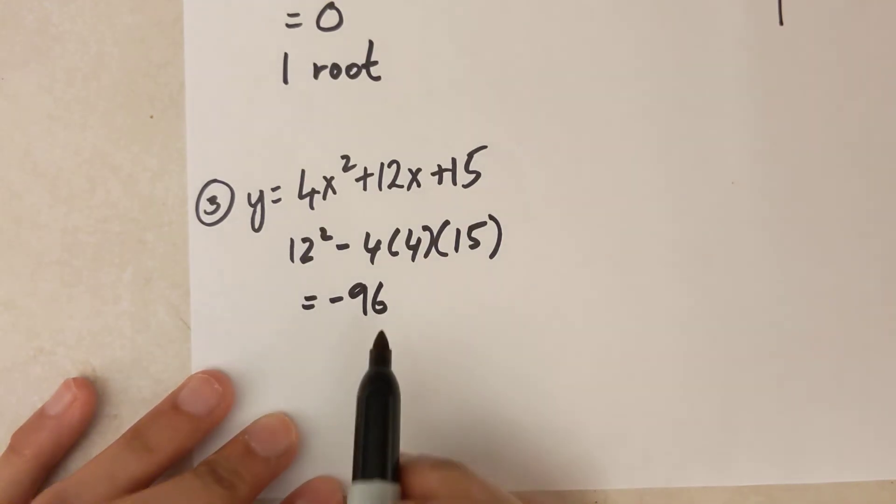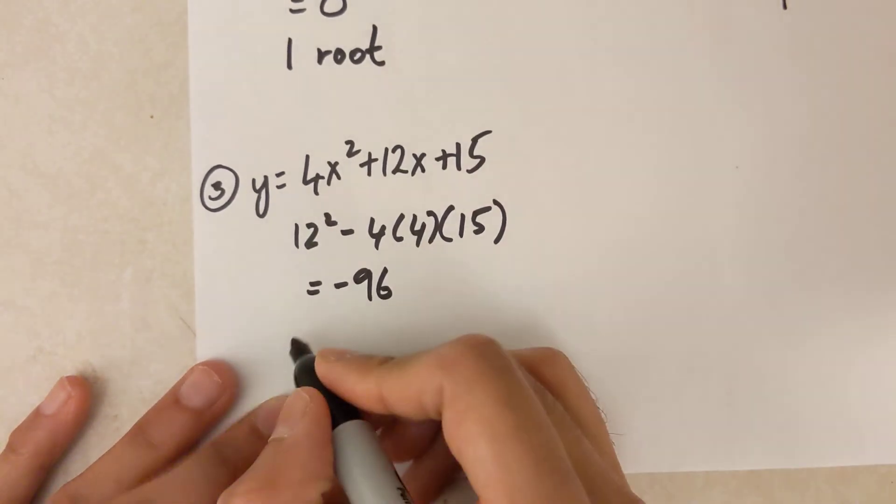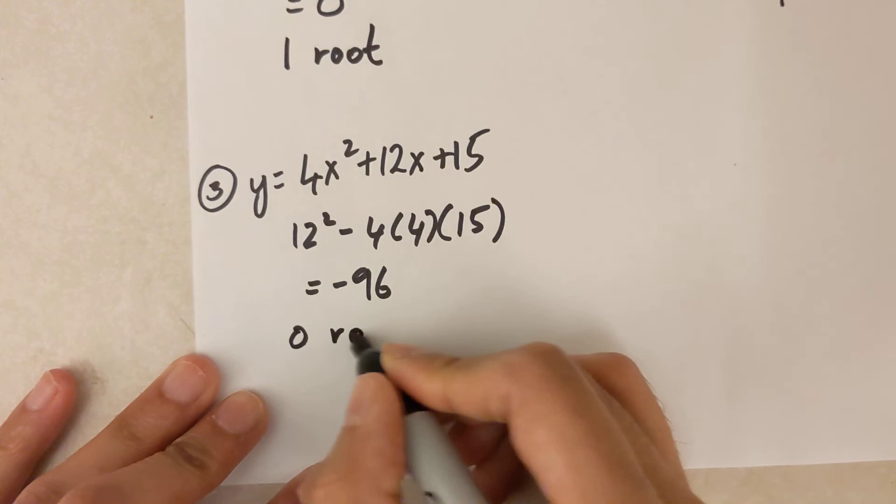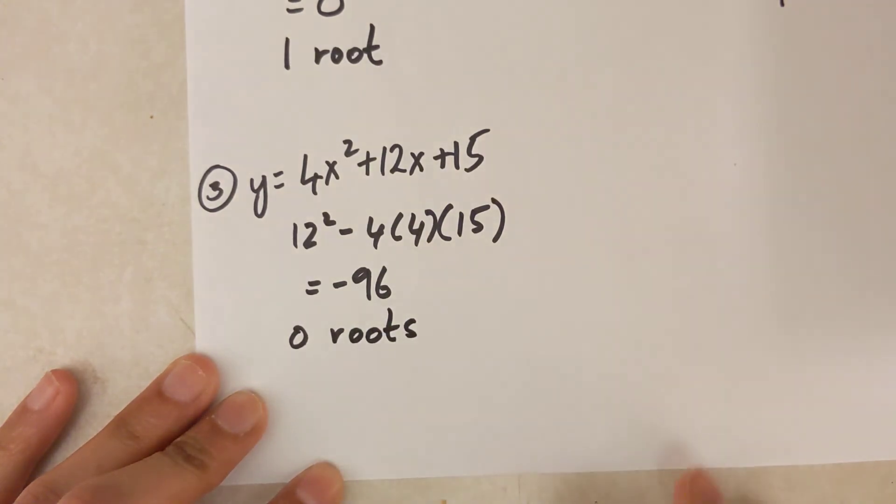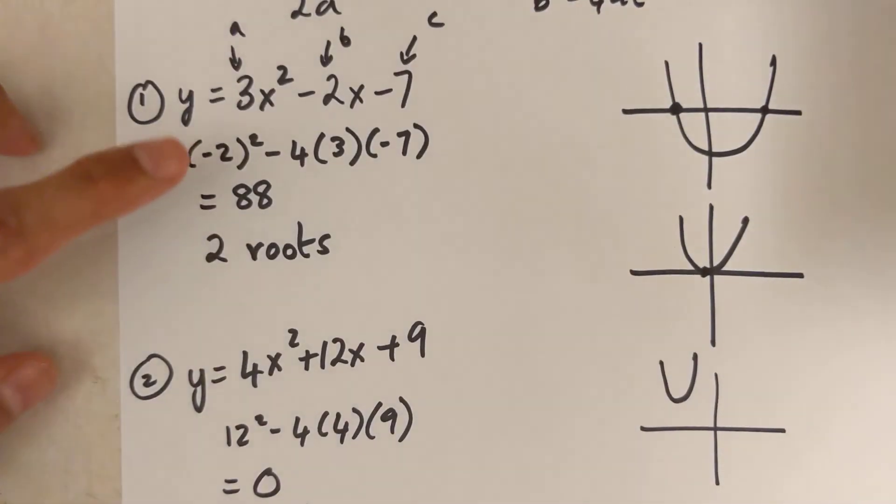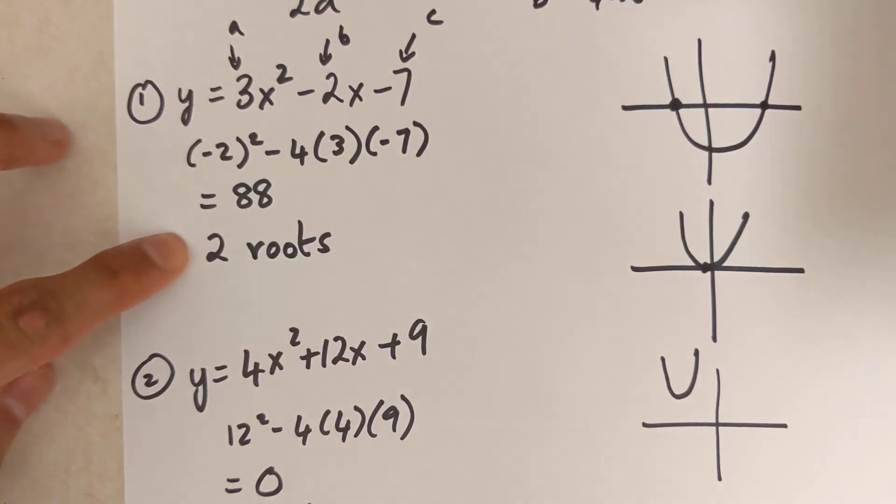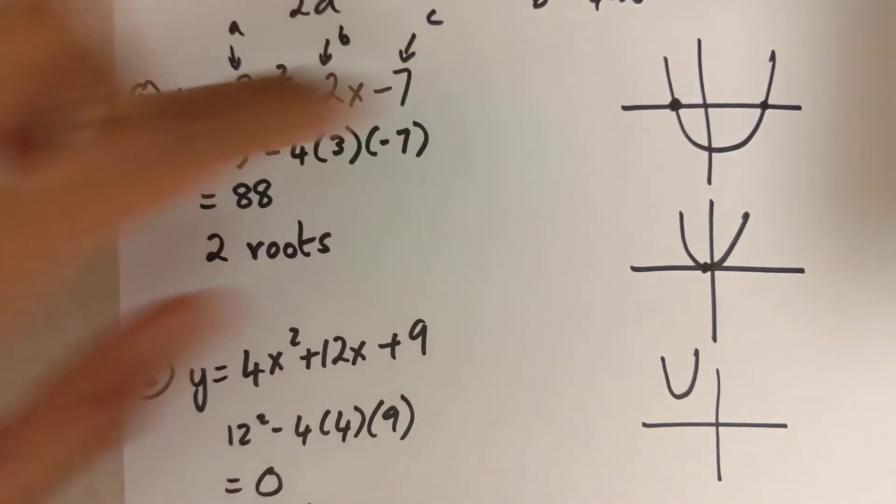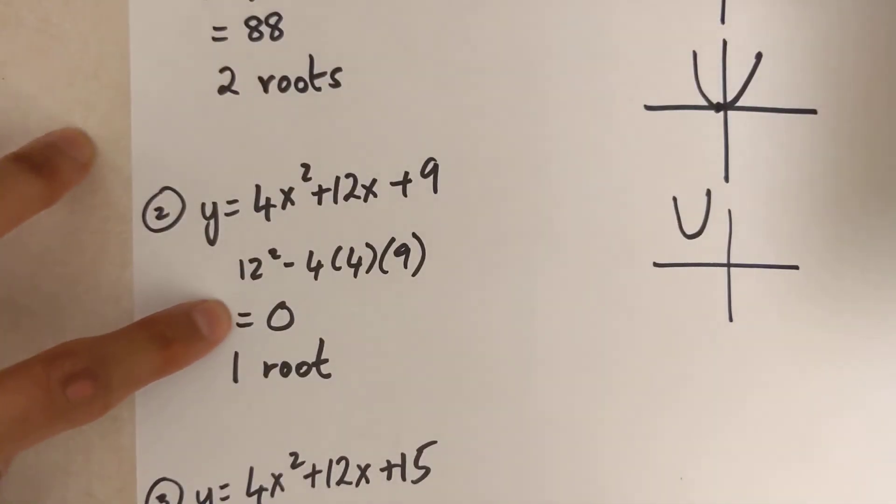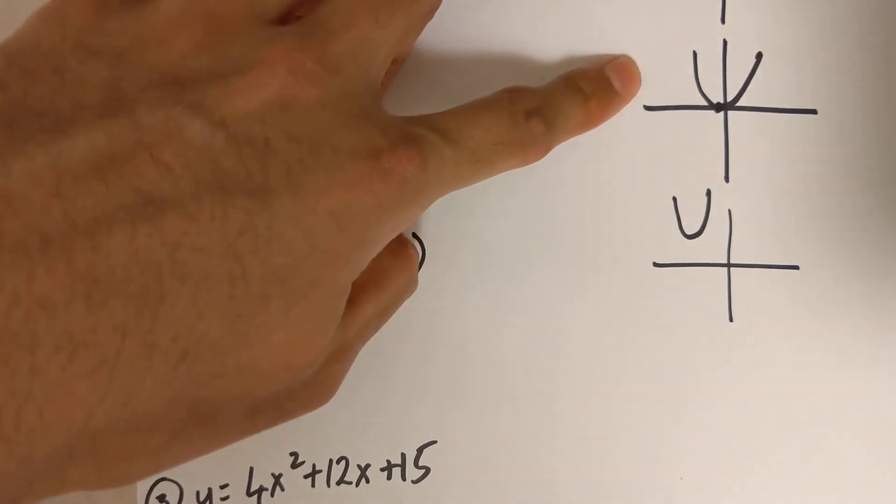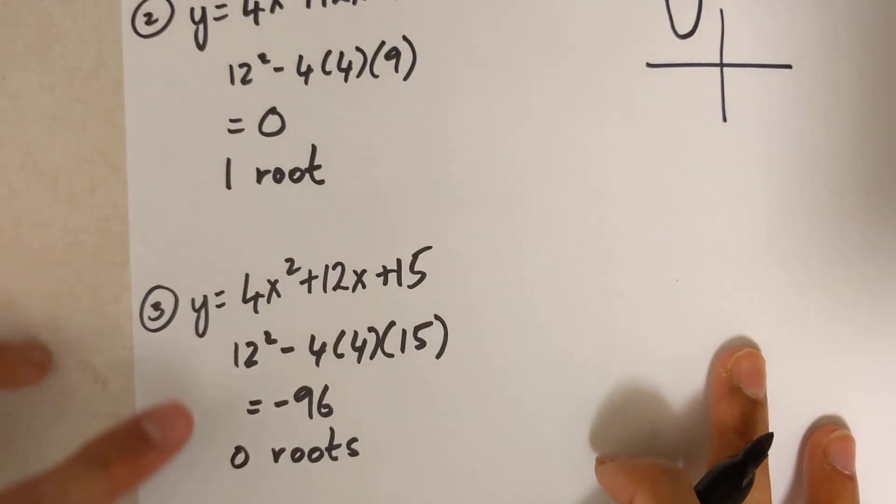If your discriminant is any negative number, it means you have 0 x-intercepts or 0 roots. Okay, so to recap: if your discriminant is positive, it's 2 roots, the first case over here. If your discriminant is 0, it's 1 root, the second case over here. And if your discriminant is negative, it's 0 roots, that's the third case over there.